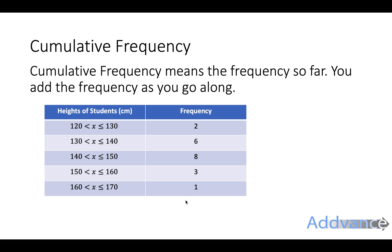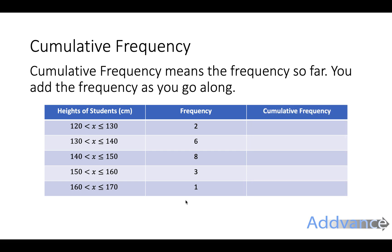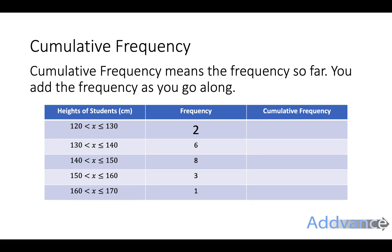To find the cumulative frequency, we add another column — the cumulative frequency column — and we add the frequency as we go along. In this box, we're going to put the frequency up to 130, and the frequency up to 130 is 2. So we put 2 there.